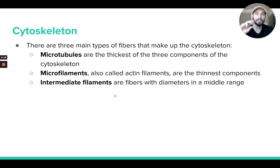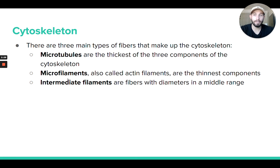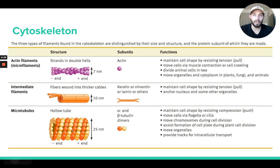The protein fibers that we find in the cytoskeleton — there's three types. You don't need to memorize these three types, but there are three types of protein fibers. Just be aware of these words and know that they're related to the protein fibers that make up the cytoskeleton: there's microtubules, microfilaments, and what's called the intermediate filaments. There's a table here that gives you a brief overview of each of them. Please do not memorize any of this stuff — just know that these three types of fibers form the cytoskeleton.